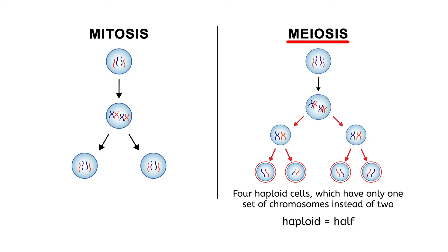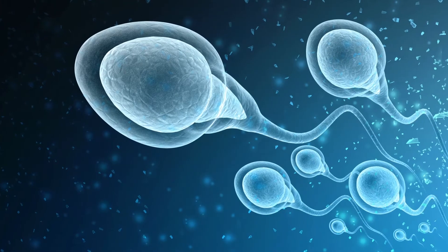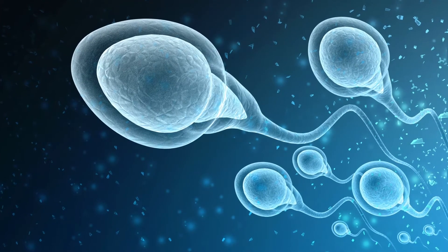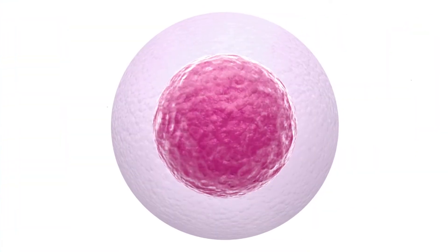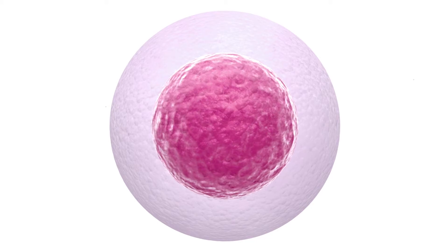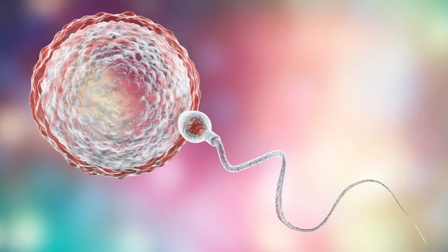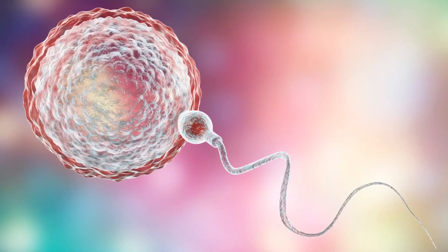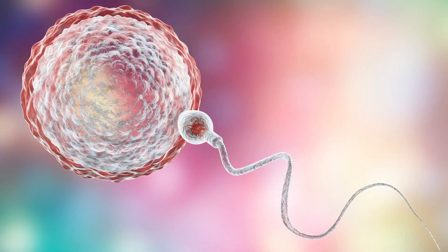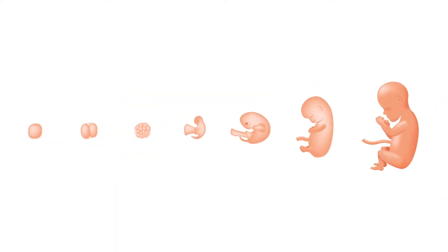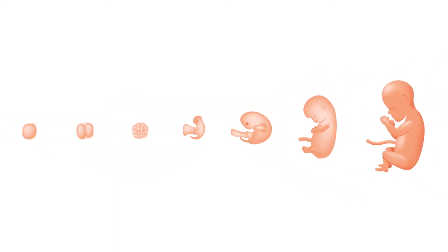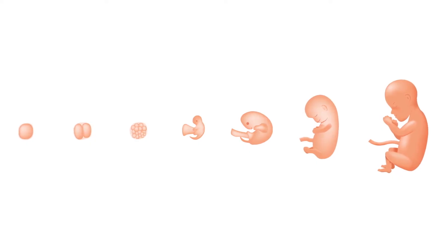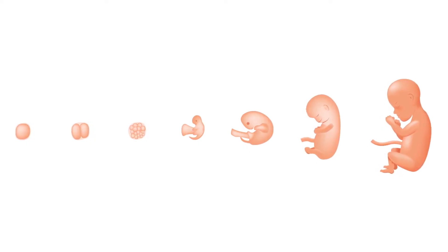In males, this process creates sperm cells, and in females, it creates egg cells. When these haploid cells are combined together, the result is a cell with a complete set of chromosomes. This one cell contains the blueprint, or genetic instructions, for a whole new life form that is entirely unique from its parents.